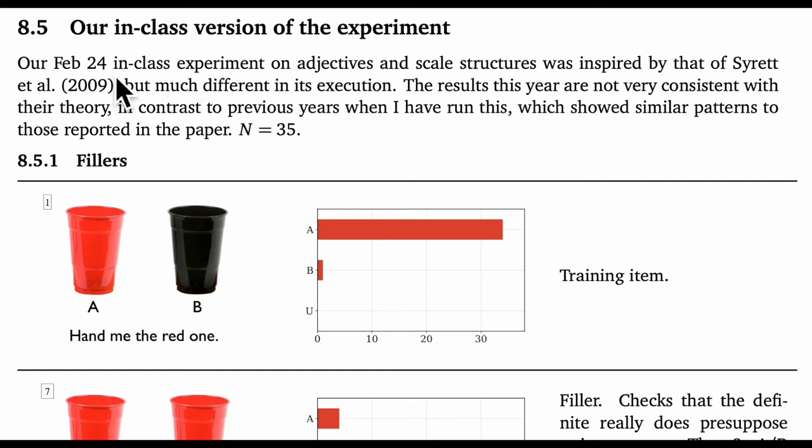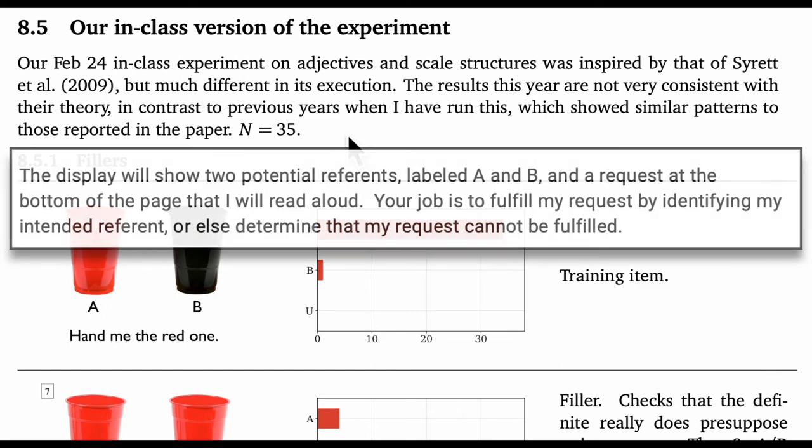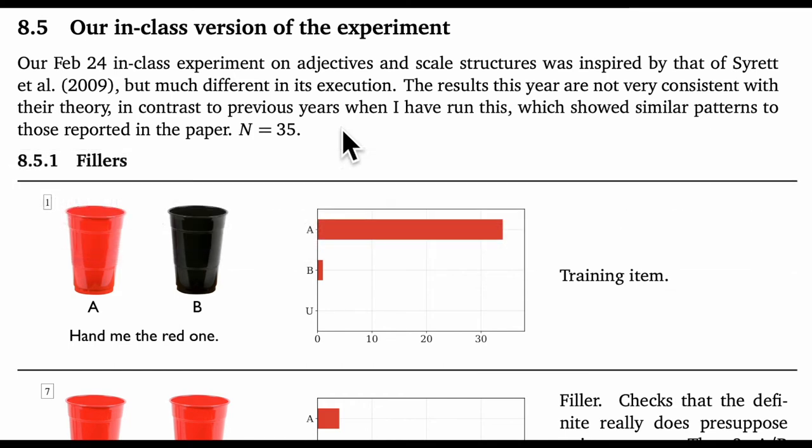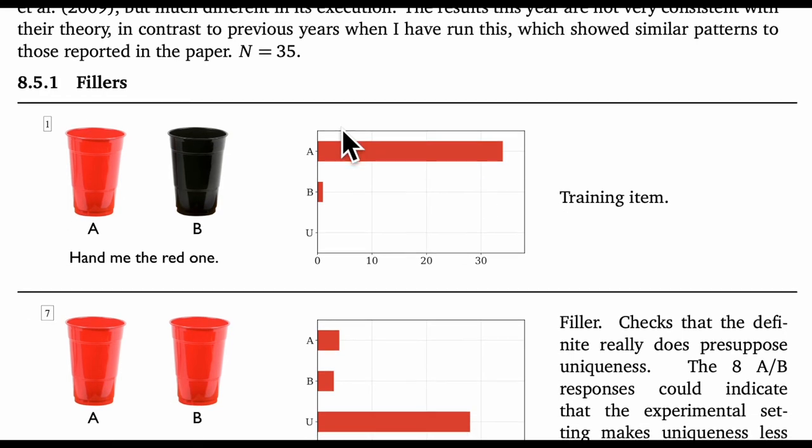Recall that we did this experiment in class with most people on Zoom, and the instructions read, The display will show two potential referents labeled A and B, and a request at the bottom of the page that I'll read aloud. Your job is to fulfill my request by identifying my intended referent, or else determine that my request cannot be fulfilled. So I showed pictures and read requests, and people made their choices in a Google form.